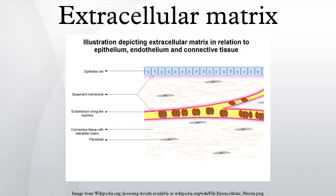Collagen can be divided into several families according to the types of structure they form: fibrillar, facet, short chain, basement membrane, and other. In contrast to collagens, elastins give elasticity to tissues, allowing them to stretch when needed and then return to their original state. This is useful in blood vessels, the lungs, skin, and the ligamentum nuchae, and these tissues contain high amounts of elastins.